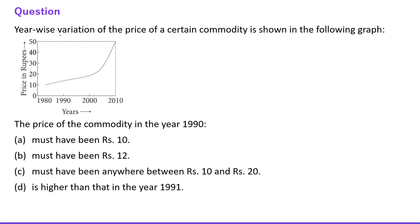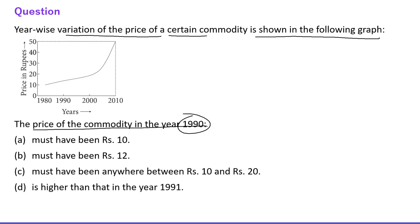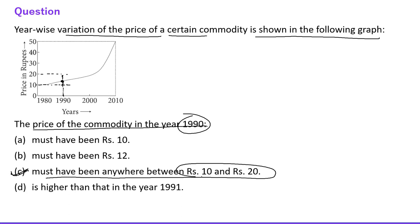Next question: A graph shows year-wise variation in price of a commodity. In 1990, the price is more than 10 and less than 20. So the price is somewhere between Rs. 10 and Rs. 20. Option C must fall in that range, making C the correct choice.